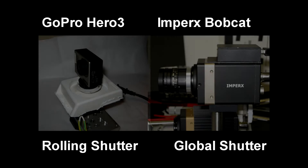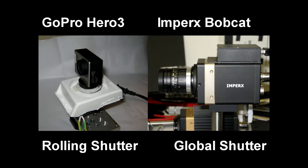Today we're going to take a look at the differences between a rolling shutter camera and a global shutter camera for capturing action videos. The cameras used for this test were the GoPro Hero 3 with an electronic rolling shutter CMOS sensor, and a Bobcat camera from Imprix that has a global shutter CCD sensor.